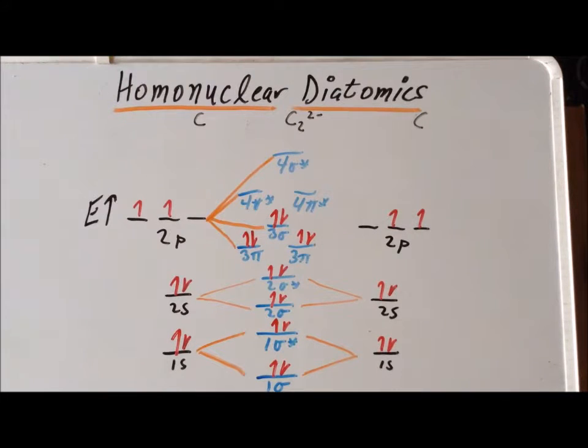We take half of that number. So this is equivalent to a triple bond, which is how we conveniently and conventionally draw the acetylide or the carbide ions using Lewis-Langmuir theory.